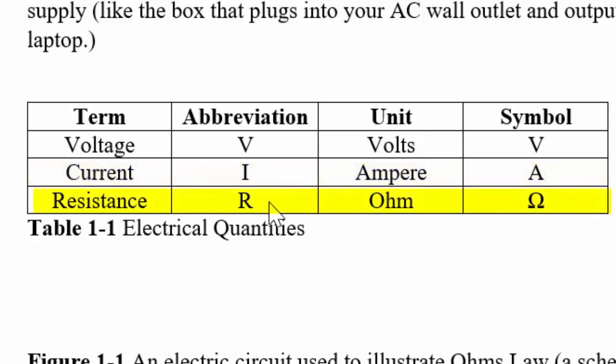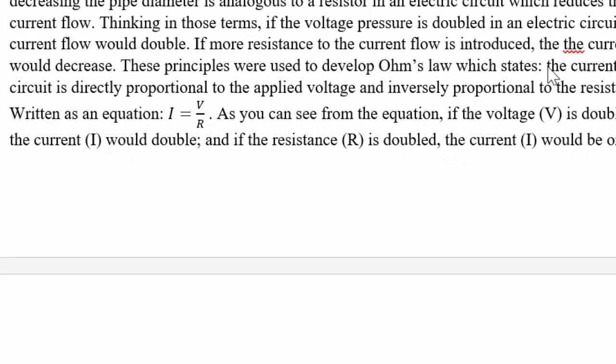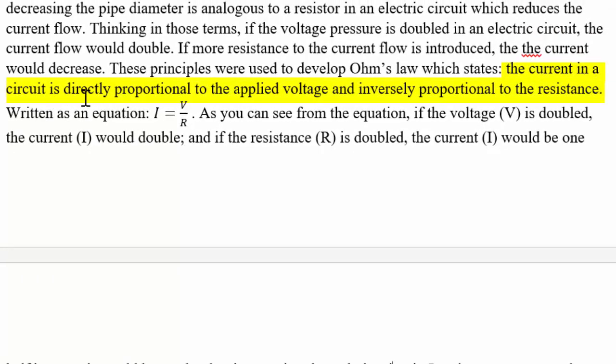Resistance is abbreviated R, and the unit is the ohm, which is a Greek omega. With ohms a lot of times we use kilohms, which is thousands of ohms, so one kilohm is one thousand ohms. The actual equation for Ohm's law is I equals V over R, so the current that flows in the circuit is equal to the voltage applied to the circuit divided by the resistance. In words, it's stated that the current in a circuit is directly proportional to the applied voltage and inversely proportional to the resistance.